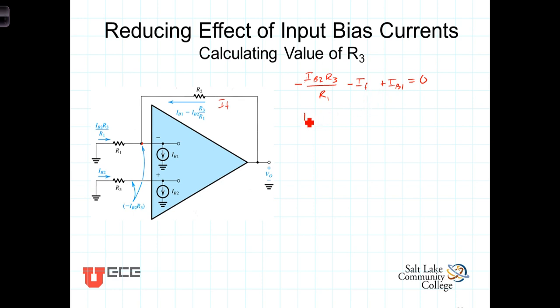We can then solve for the feedback current, I sub F, is equal to IB1 minus IB2 times R3 over R1. And that's the current here that's being shown in blue.